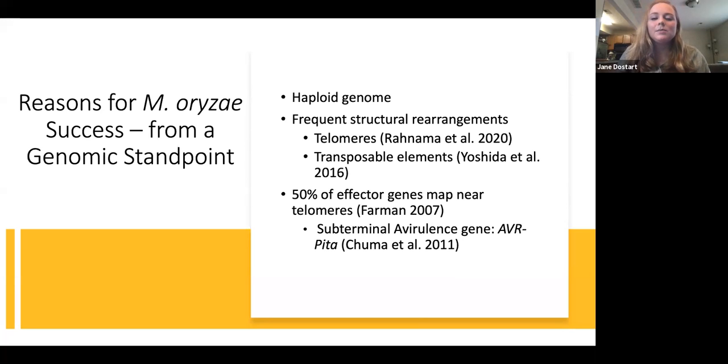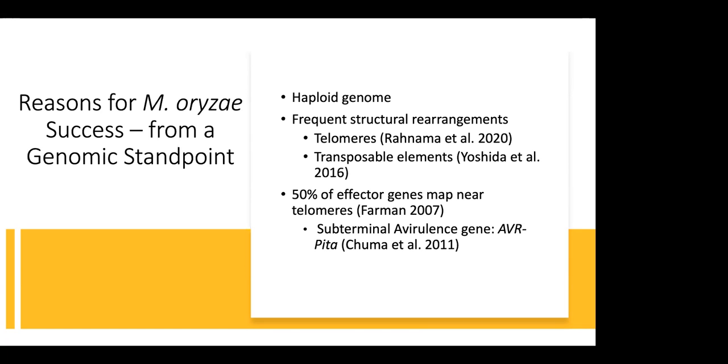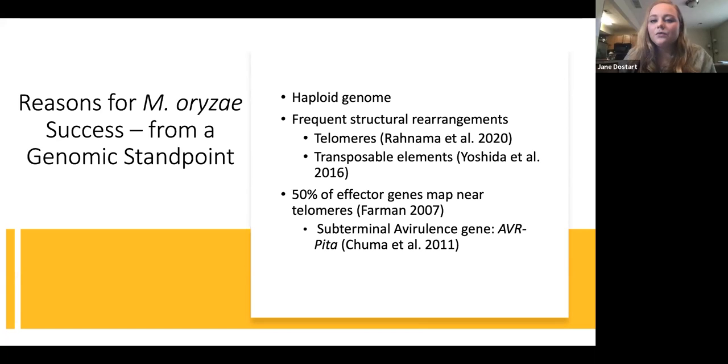Part of that success comes from it having a haploid genome, meaning that it only has one copy of each of its chromosomes. So whenever you have a mutation or a rearrangement that arises, that is what is essentially expressed or allowed to be expressed. Whereas if you had a diploid genome, the other chromosome then might be expressed instead. And we know that within this fungus, it experiences frequent structural rearrangements, specifically within the telomere. We also know that these genomes are littered with transposable elements, and we see these more towards the telomeric regions of the genome as well.